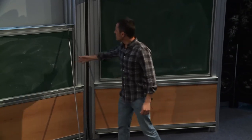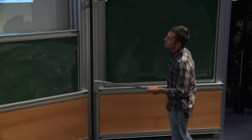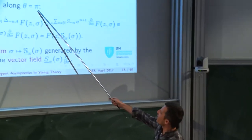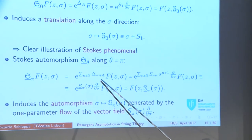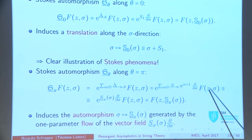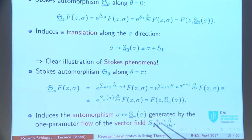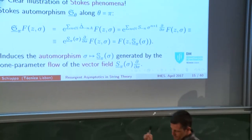But that's not the only Stokes phenomenon. Along pi, I have many singularities, and when I play this game the automorphism is more complicated — generated by the one-parameter flow of a vector field. Stokes phenomenon comes for free in this business.